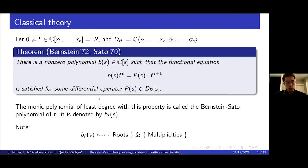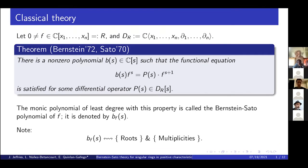This is the invariant that we're interested in. Because we're working over the complex numbers, every polynomial splits completely. To give the data of the Bernstein-Sato polynomial is the same as giving the data of the roots and the multiplicities. In characteristic p, we only have a good analog of the roots, but not of multiplicity. So the invariant in characteristic p is perhaps a little weaker, but we'll see that the roots already encode a lot of interesting information.